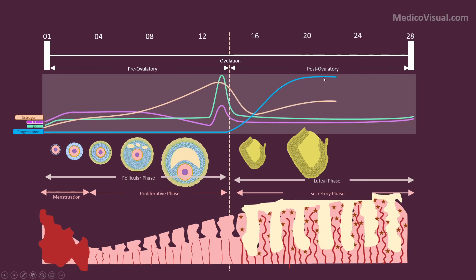The corpus luteum produces large amounts of progesterone and relatively less estrogen. During all these phases, levels of FSH and LH remain at baseline. But what if pregnancy doesn't occur?